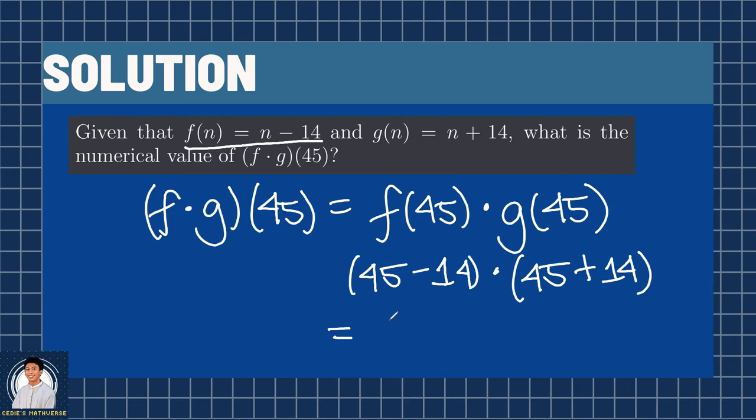This is equal to 31 times 59. When we multiply this, the answer is 1,829. So the numerical value of f times g of 45 is 1,829. Notice the 18 and 29 right there.